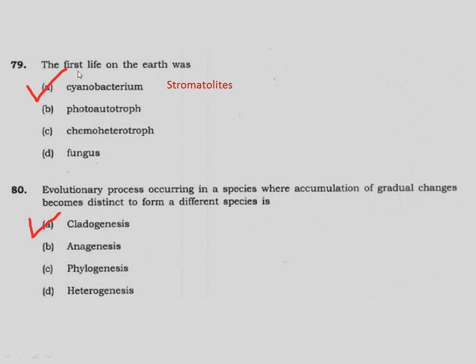Question 79: The first life on earth was in the form of stromatolites, which were a type of cyanobacteria. Correct answer is option A.